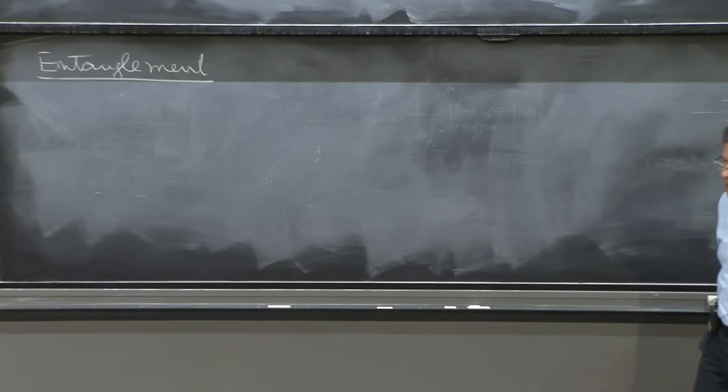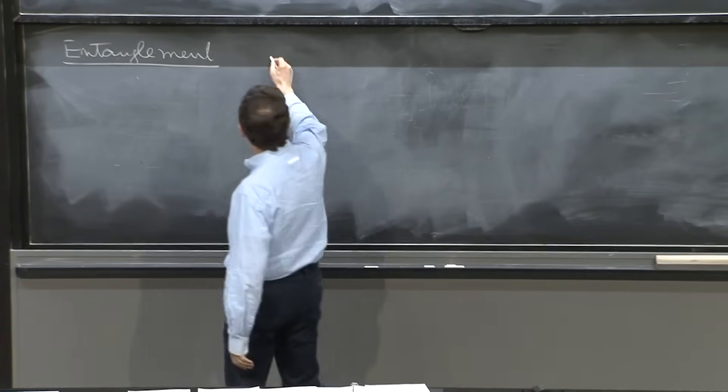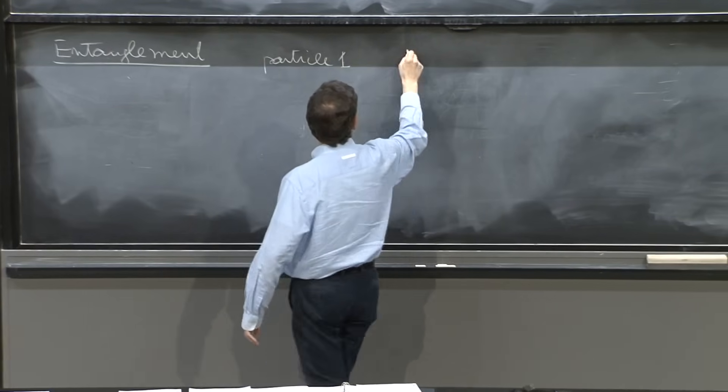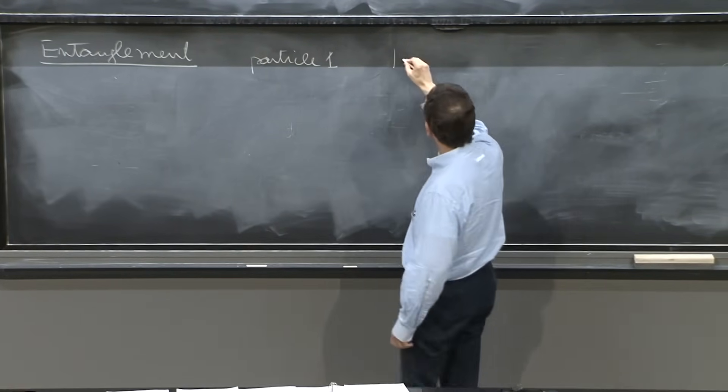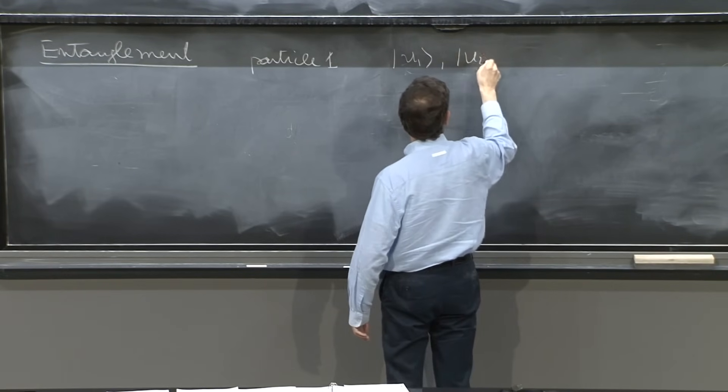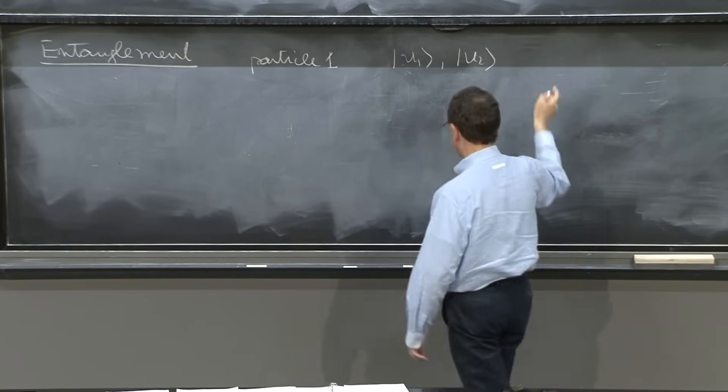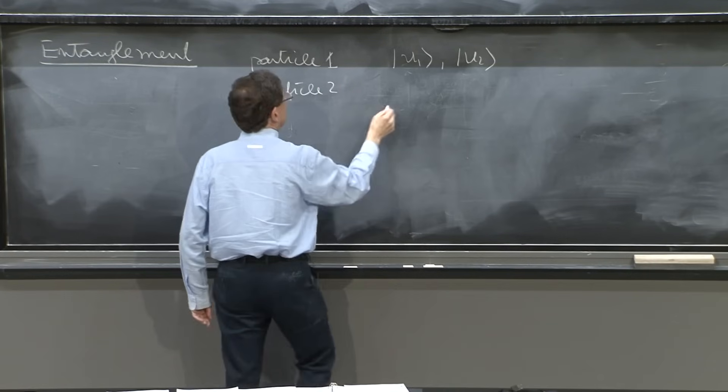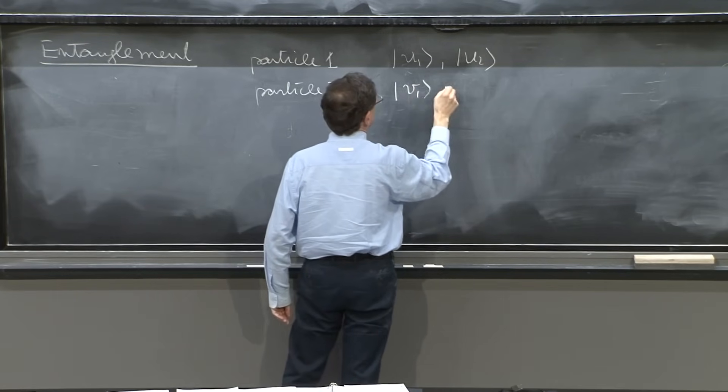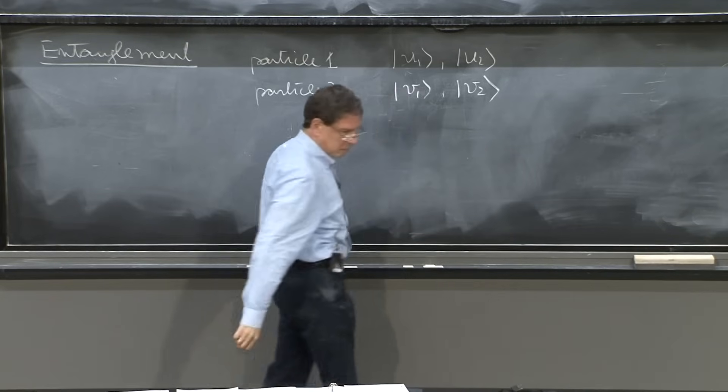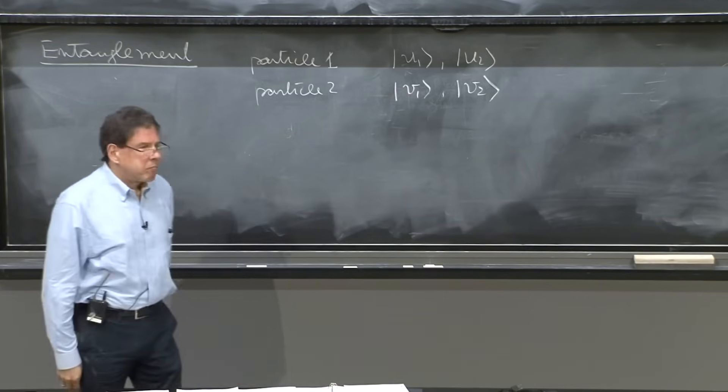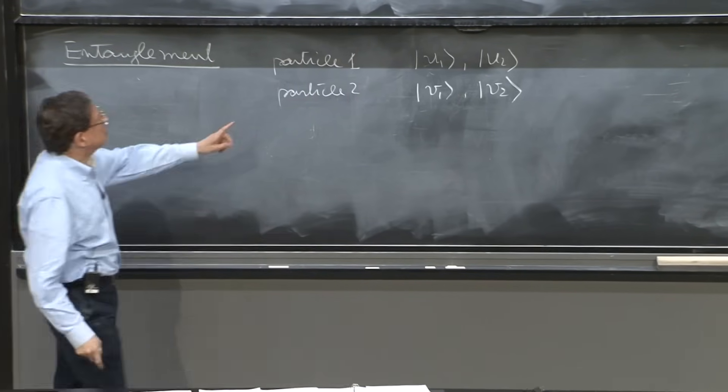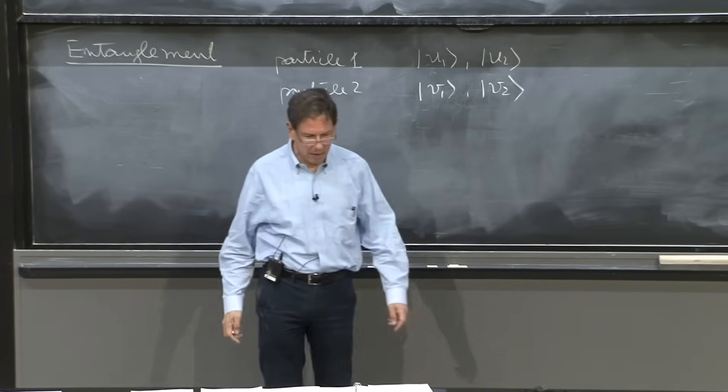The particles can be totally non-interacting. Suppose particle 1 can be in any of these states, u1, u2. Let's assume just u1 and u2. And particle 2 can be in states v1 and v2. And you have these two particles flying around. These are possible states of particle 1 and possible states of particle 2.